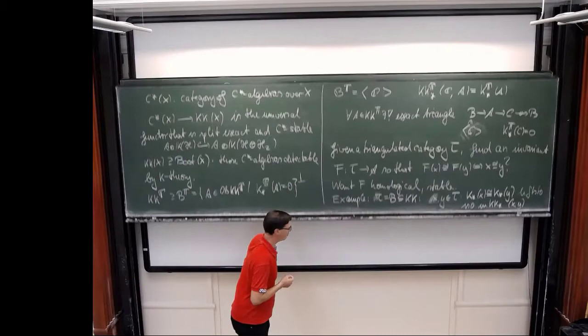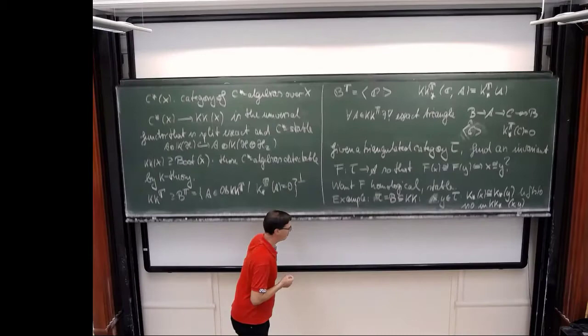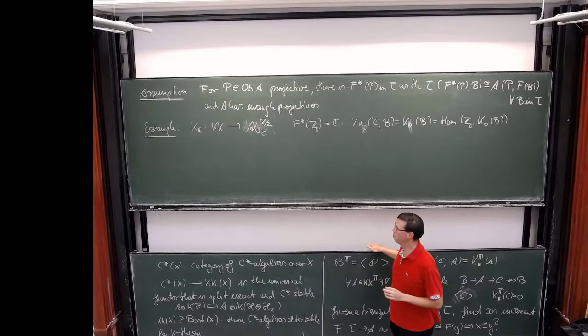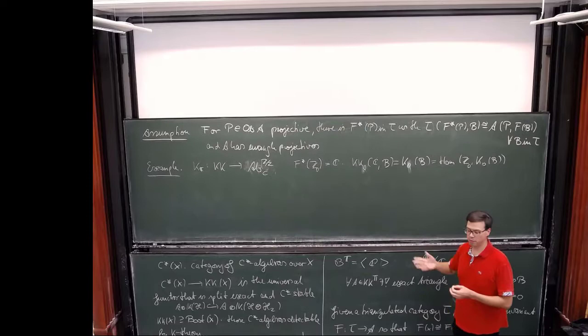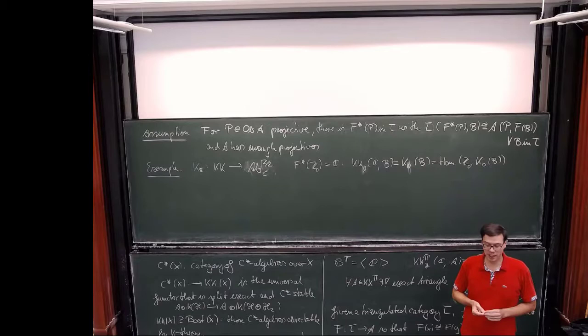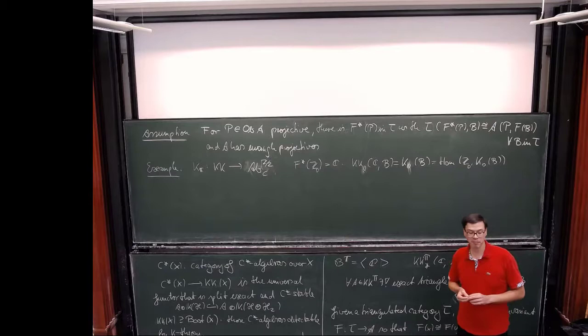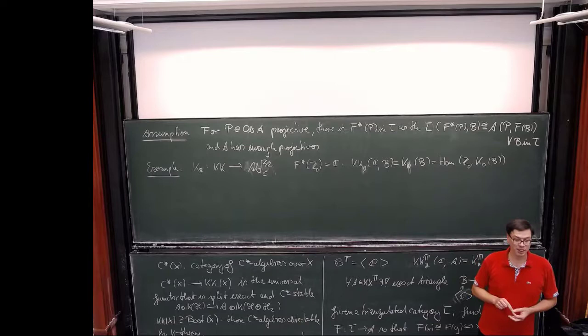A similar line works for the variants of KK theory. If you work with C* over X, there are also certain C*-algebras which are just complex numbers put on different points in the space, which have the same features. In all these cases you have enough projectives in the tilted category and you can lift them in this way. It's actually quite useful to turn the tables and instead of trying to classify objects, think about lifting objects of A.